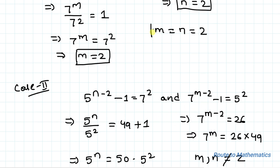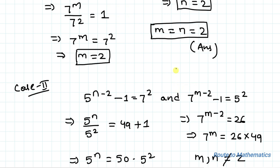So this is the only value of m and n satisfying all the conditions. Hence the values of m and n equal to 2 is our answer. I hope you have understood the solution. Thanks for watching. Please subscribe to my channel and click the bell icon for more such interesting videos. Thank you.